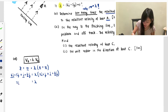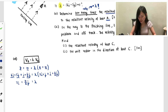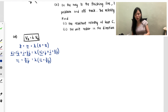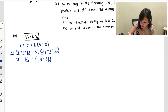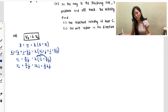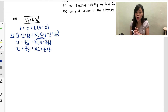Now combine all the i terms and all the j terms together. For vB: 6i + 1i = 7i, and 3j + ½j = 7/2 j. For vA: 2i + 1i = 3i, and 1j + ½j = 3/2 j. So we have 7i + 7/2 j equals lambda times (3i + 3/2 j), which expands to 3λi + 3/2 λj.